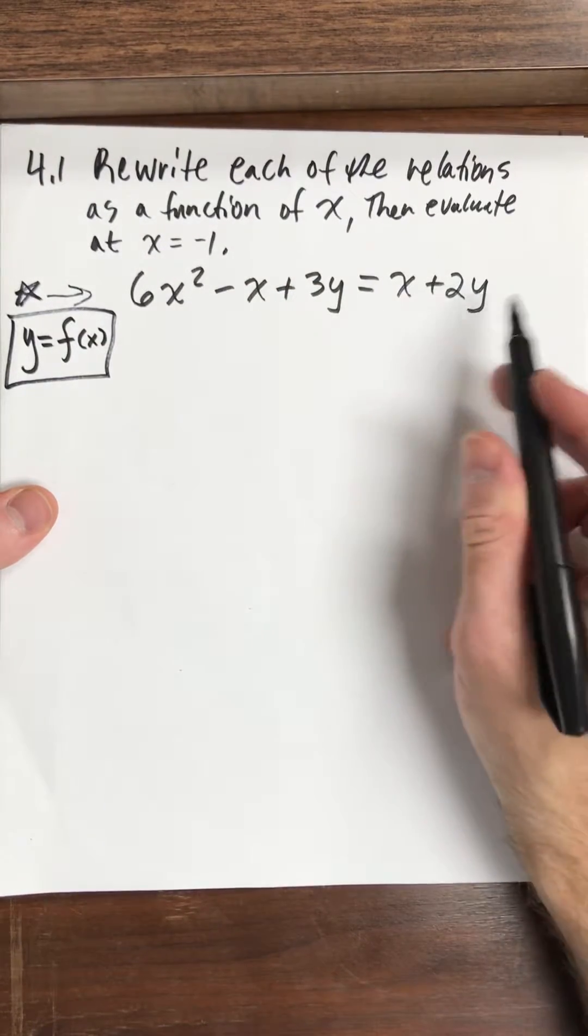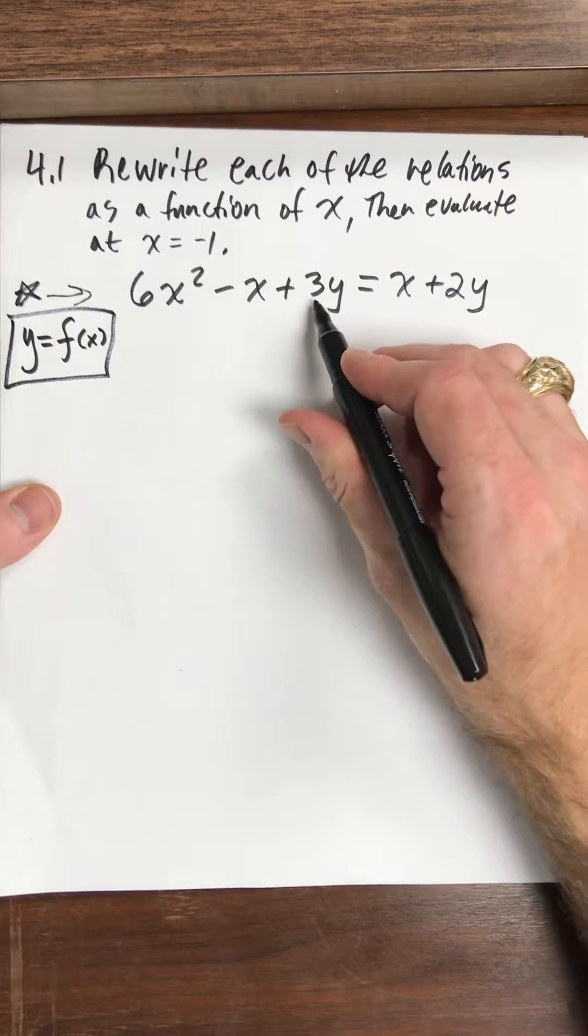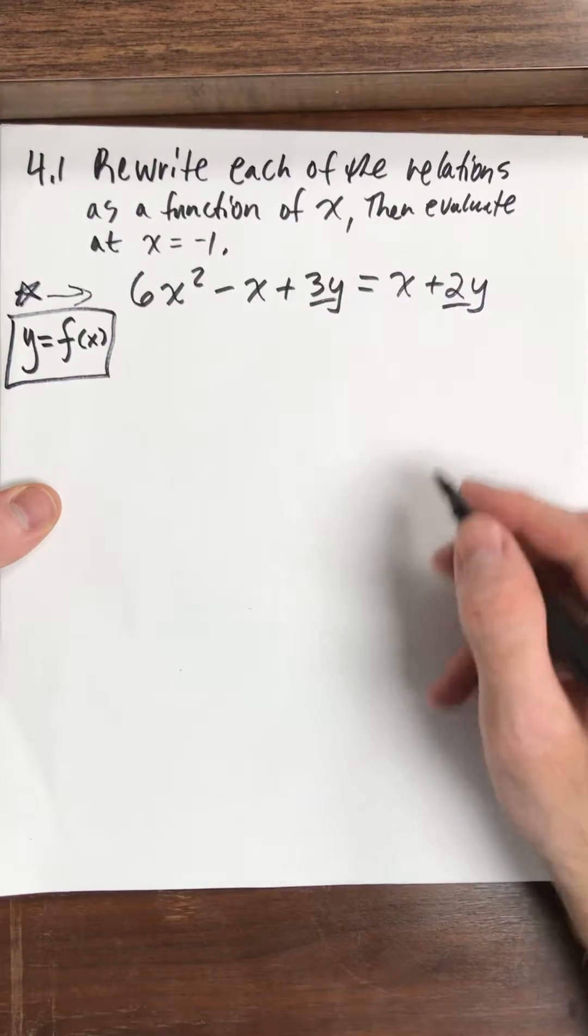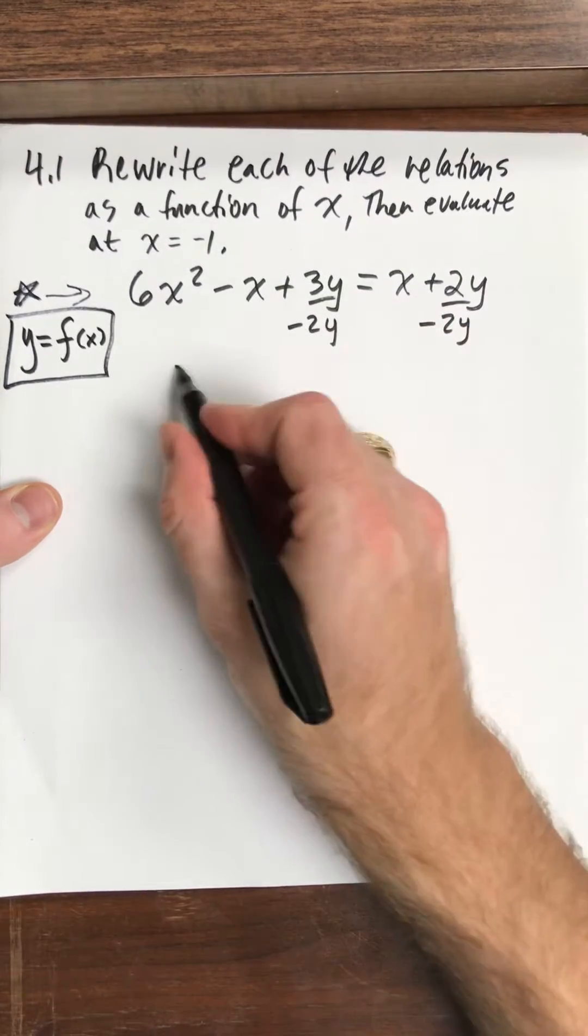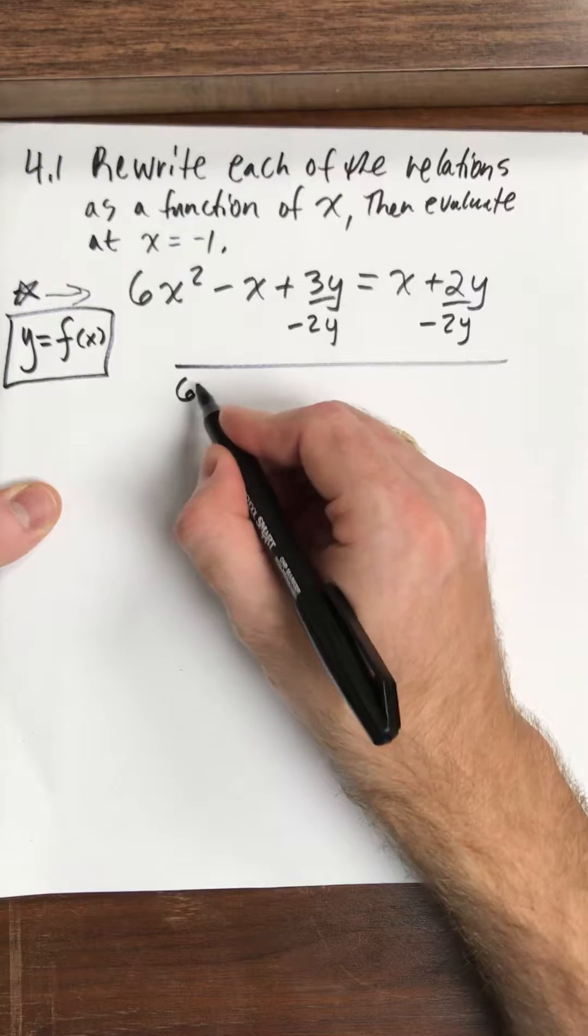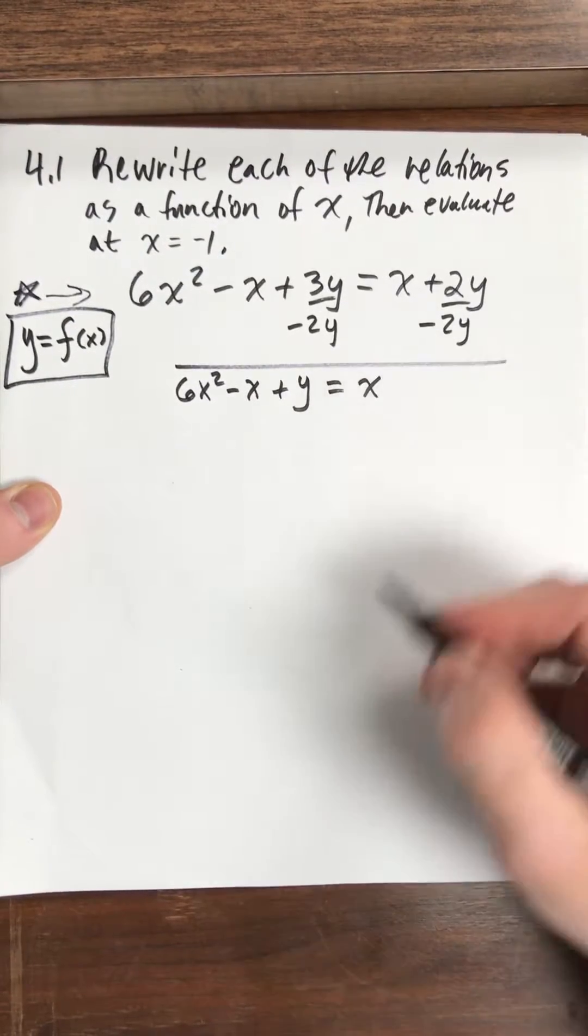Alright, so truly what I'm doing here is I'm just solving for y. So I need to get my y's by themselves. I've got a y on the left and the right. So I'm going to move this 2y over here and so I get 6x squared minus x plus y equals x.